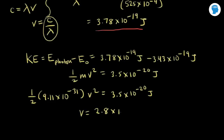If you increased the intensity of this light, you'd have more photons, which would produce more photoelectrons. One photon knocks out one photoelectron if it has enough energy to do so.